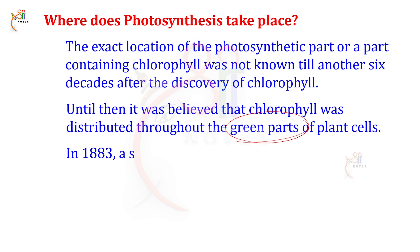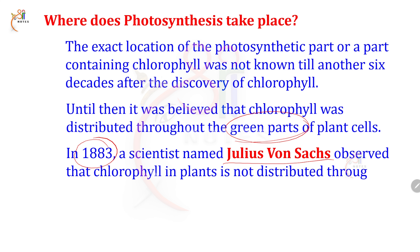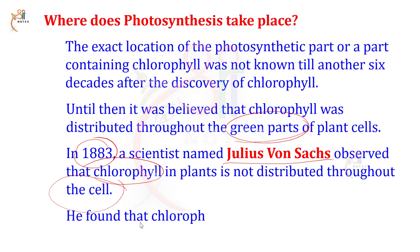In 1883 — remember this year — scientist Julius von Sachs observed that chlorophyll in plants is not distributed throughout the cell. He found that chlorophyll is located in specialized structures within the cell, called chloroplasts.